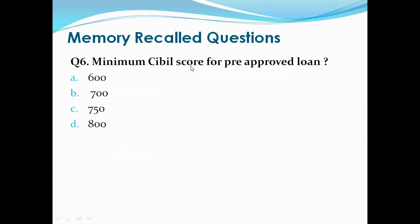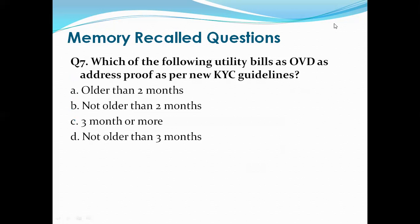Question 6: What is the minimum CIBIL score for a pre-approved loan? In the case of housing loans and some personal loans, we provide pre-approved loans. Options are: 600, 700, 750, 800. The right answer is C, that is 750. So a minimum CIBIL score of 750 is required to provide a pre-approved loan to anyone.